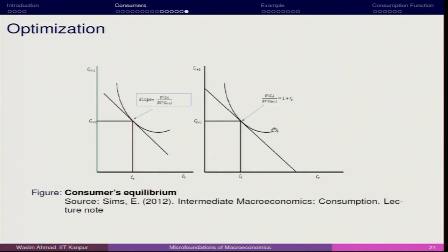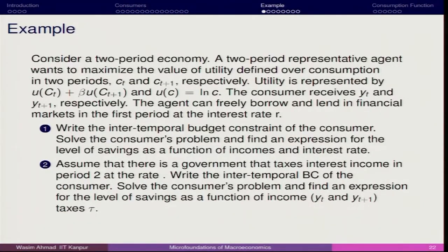If you think about the slope, here we have the current period consumption and the future period consumption. Now let us have one example — this will clear your understanding and give you the feel about this model. We will work out this particular example and then further scenarios to strengthen understanding. Suppose we have a two-period economy model. A two-period representative agent wants to maximize the value of utility defined over consumption in two periods — Ct and Ct+1. Utility is represented by U(Ct) plus beta times U(Ct+1), and U(C) equals log C.